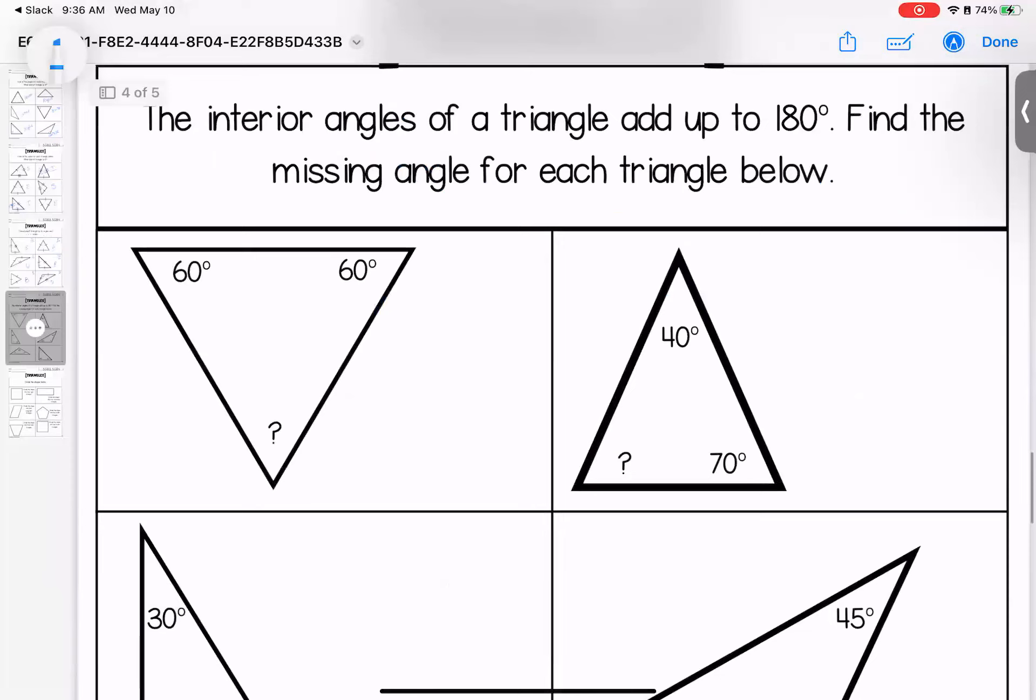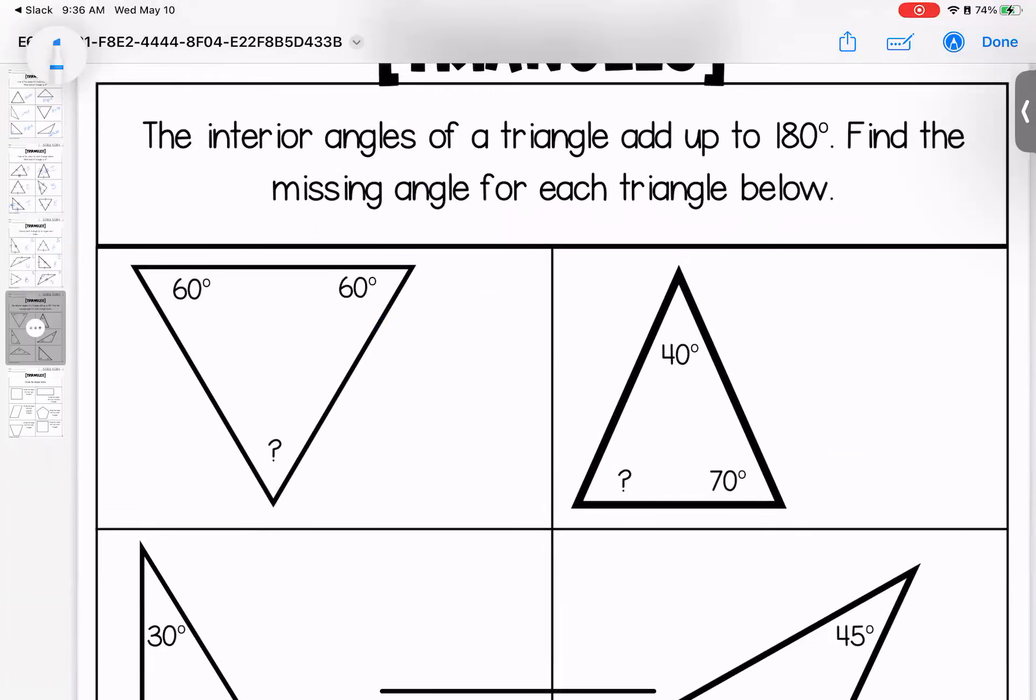Coming down here, we're looking for the interior angles. We've talked about how every triangle, the three angles need to add up to 180. So if I give you two of them, you can figure out what's missing. So here, 60 plus 60 was 120. 20 subtracted from 180 means we have 60 degrees missing. This is an acute equilateral triangle.